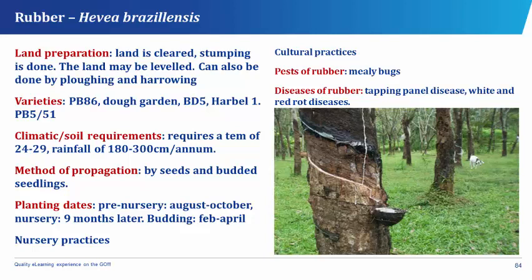The varieties of rubber are the PB86, the Dole Garden, the BD5, the RRIM 600, and the PB 251. The climatic or soil requirement of rubber is a temperature of about 24 to 29 degrees centigrade and a rainfall of 180 to 300 centimeters per annum.